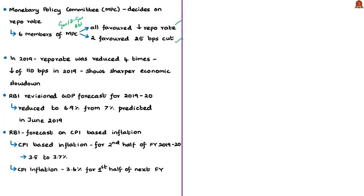In 2019, four Monetary Policy Committee meetings have been held — in February, April, June, and August. The cuts were 25 basis points in February, 25 in April, 25 in June, and 35 in August, totaling 110 basis points cut in this year alone. This indicates that the economic slowdown is sharper than what the RBI had previously predicted.